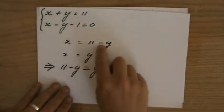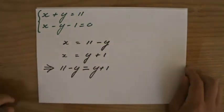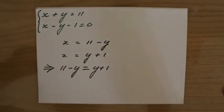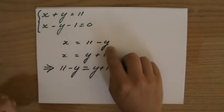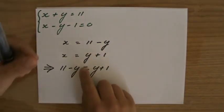Okay, and the same thing I'm doing here. If I say that x is 11 - y, and if I also say that x is y + 1, then I can conclude that 11 - y has to be the same as y + 1.